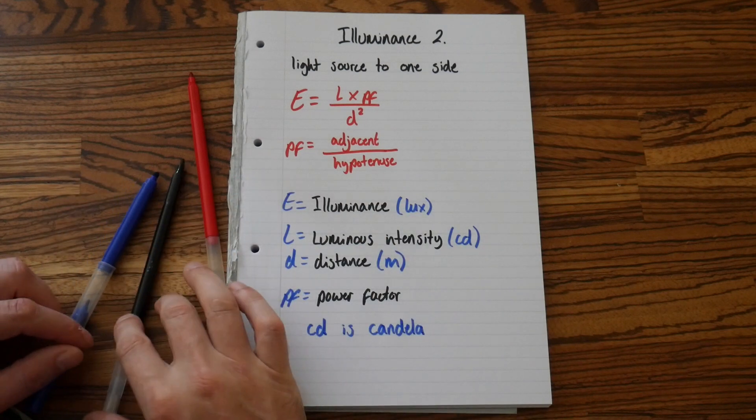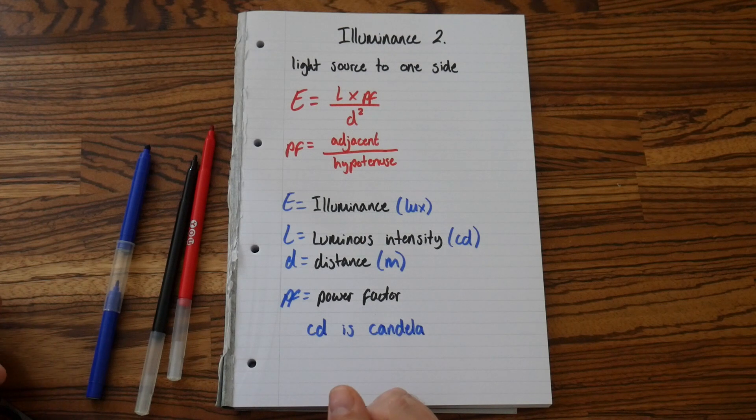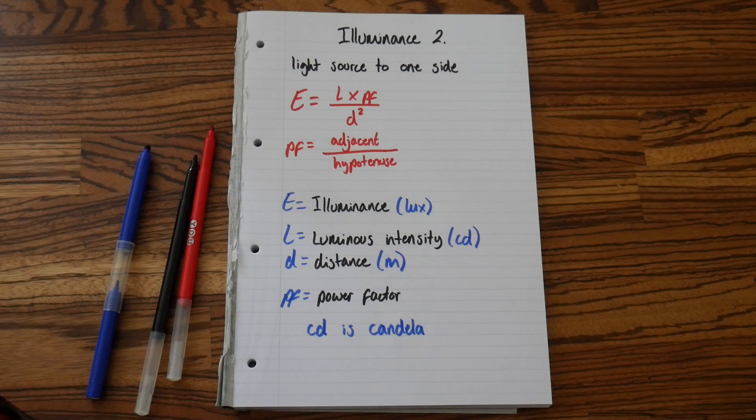They are the two formulas that you will need when you're working out the Luminance of a light source that is not directly above where we want to measure.